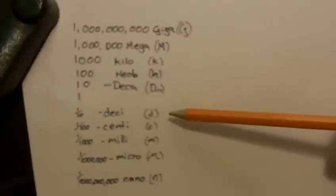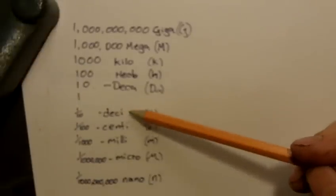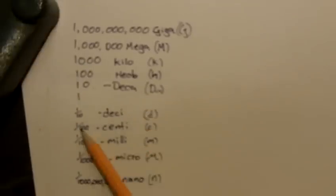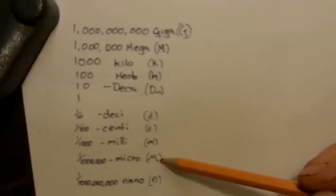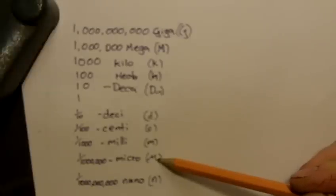Going the other way, if we want to get smaller, if we have one tenth of a meter, we have a decimeter. One hundredth, we have a centi. One one thousandth, we've got a milli. One millionth, a micro. And just to point it out, the symbol for micro is the Greek mu. It looks kind of like a cursive M. And one billionth is a nano with a little n.